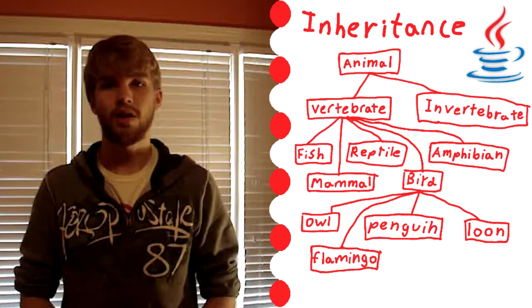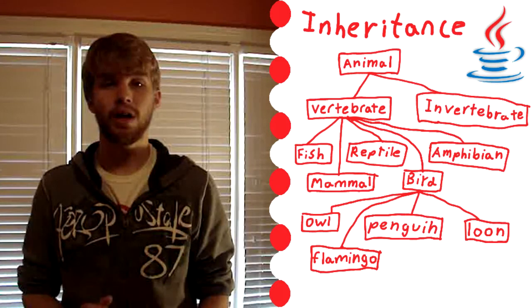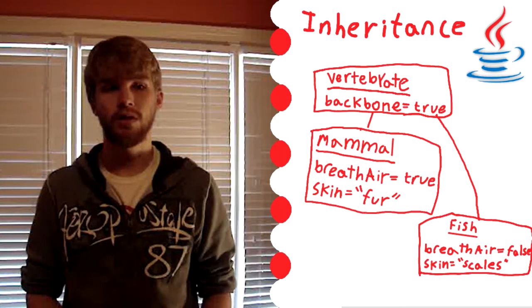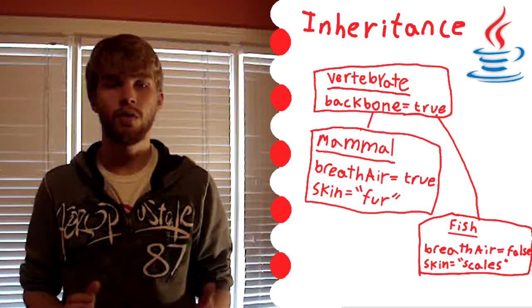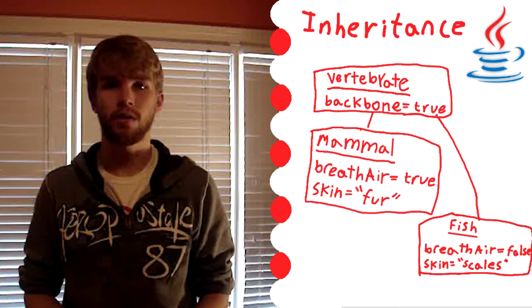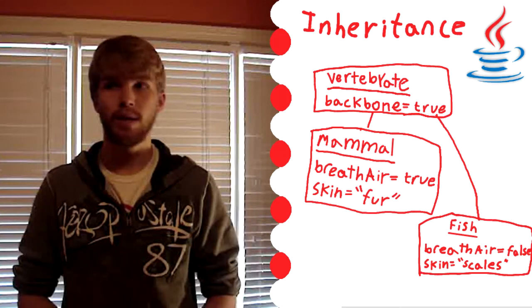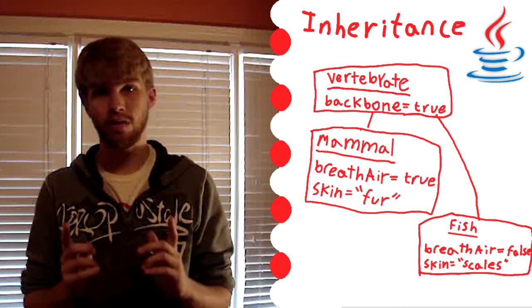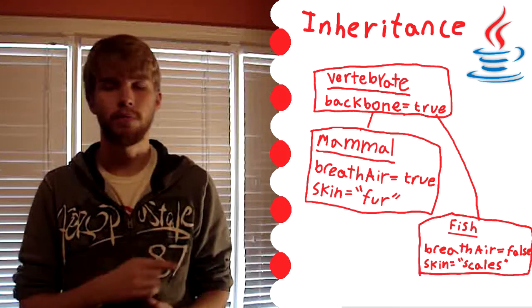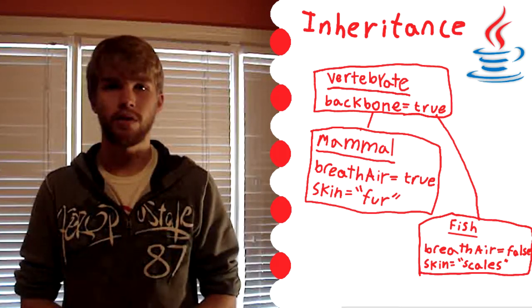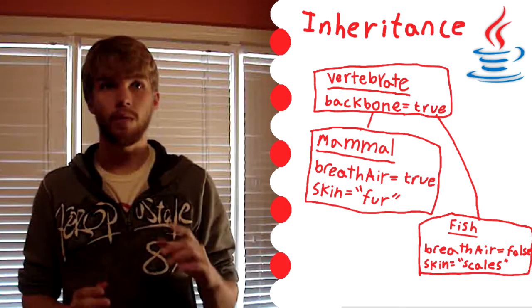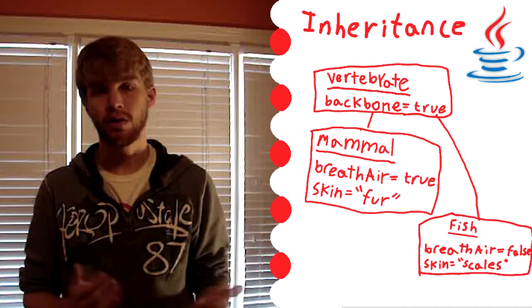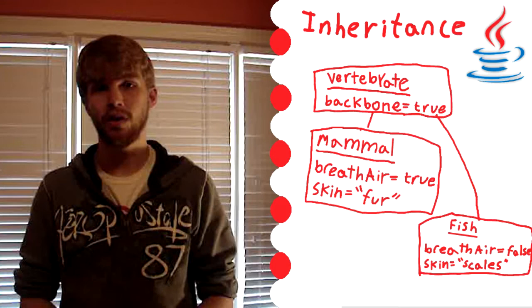So the point of this is that what you can do is you can make a class called vertebrate and you could give it some methods or variables that hold true for all vertebrates. Like for instance, you can have a variable called backbone, say backbone equals true. And that might be all you have for the vertebrate class, but the point is that line of code is one line of code you'll have to write for all the million classes that would fall under the class vertebrate, because the other classes will extend vertebrate or they'll be children of it or they'll inherit the attributes from vertebrates. That's how inheritance works.